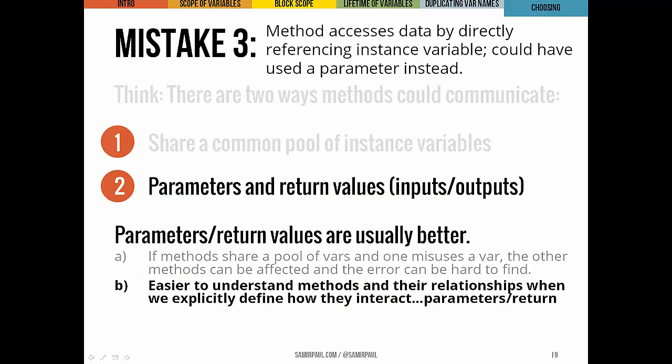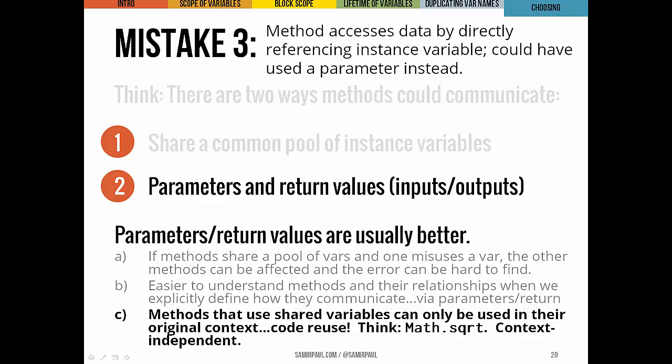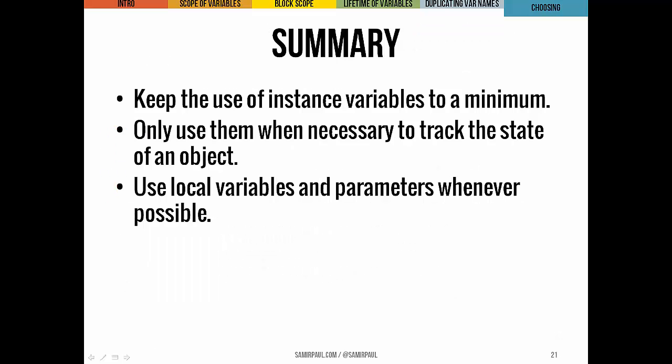There are good reasons to prefer parameters and return values over instance variables. First, if methods share instance variables and one misuses a value unexpectedly, it can be hard to trace because many methods change the same values. Second, explicitly defining how methods interact — what parameters they take and what they return — ensures better documentation and understanding of those contracts. Third, code relying on a specific object structure can only be used in its original context, while code using parameters is easier to port. Instance variables are powerful, but use them judiciously — only to track object state, and use local variables and parameters whenever possible.